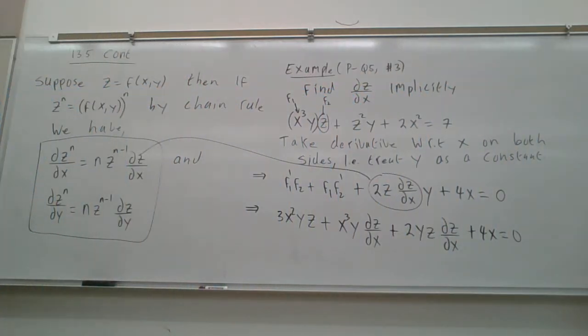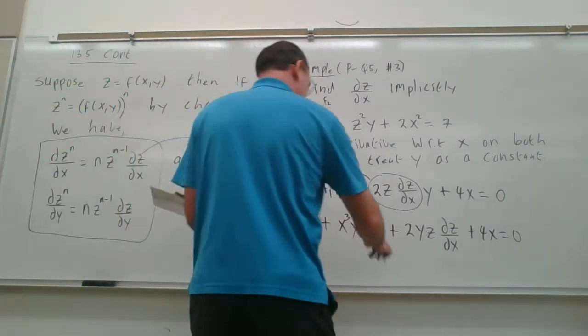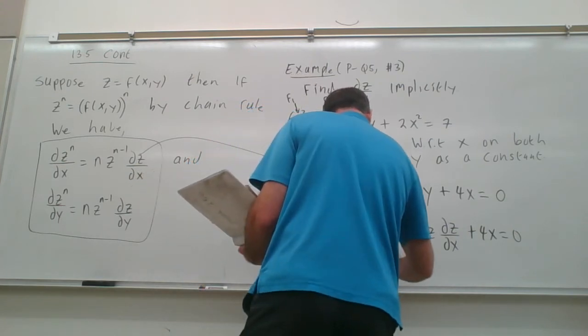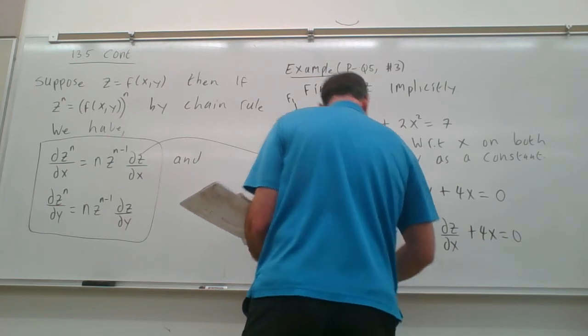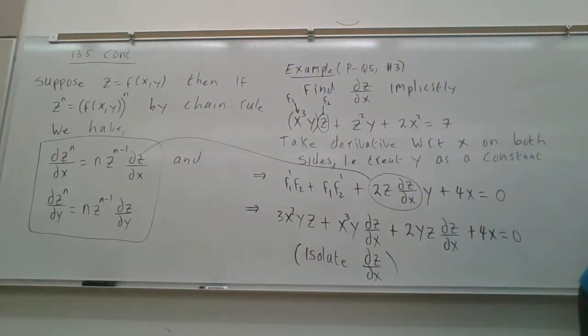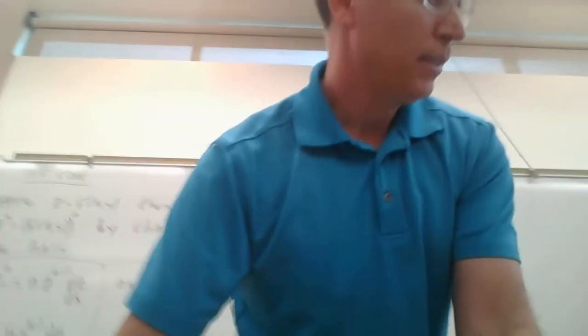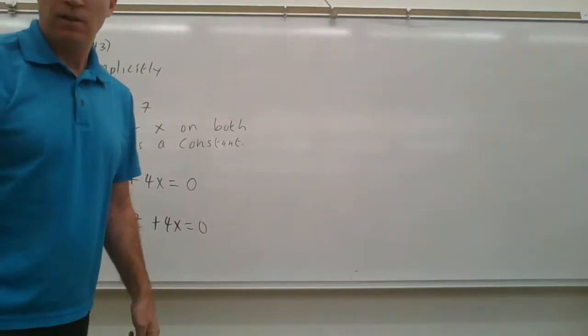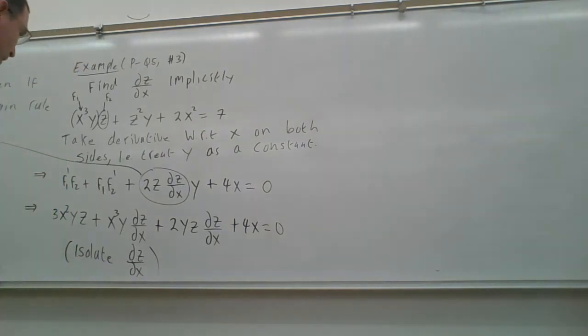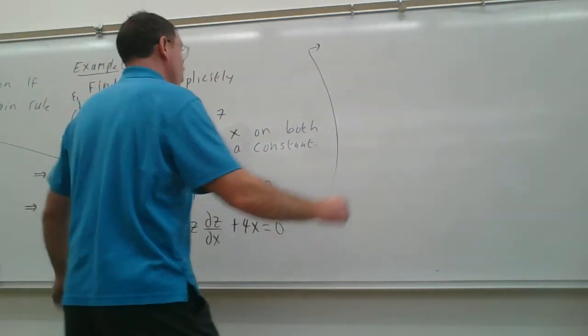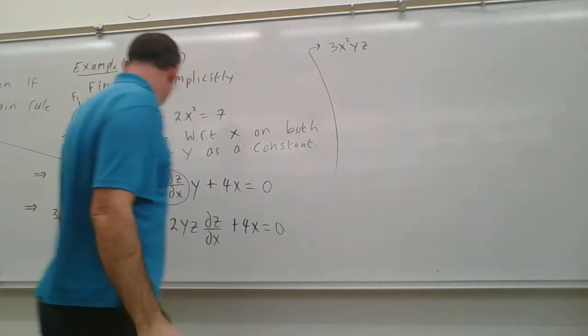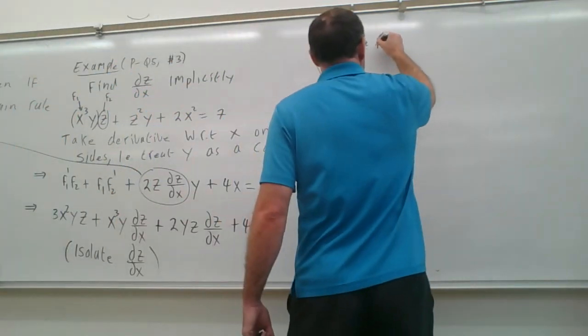Okay, so now we're going to isolate the partial z with respect to x. So isolate partial z with respect to x, so get it by itself. So let's do that. So isolating it, we'll have then the 3x²yz on one side and the 2yz on this side.